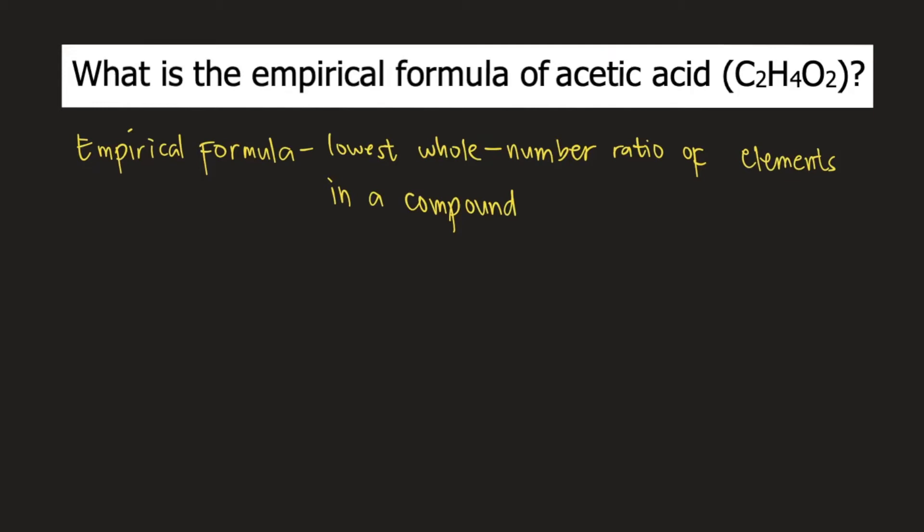What is the empirical formula of acetic acid, or C2H4O2? The empirical formula tells us the lowest whole number ratio of elements in a compound.